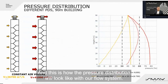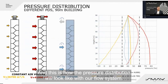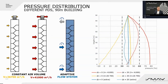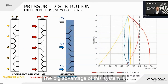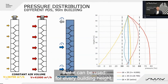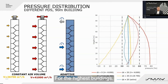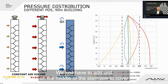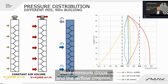This is how the pressure distribution looks with our flow system. A big advantage is that it can be used for any building height. For the tallest buildings, we simply add a unit in the middle of the staircase to cover local pressure drops and the airflow criterion.